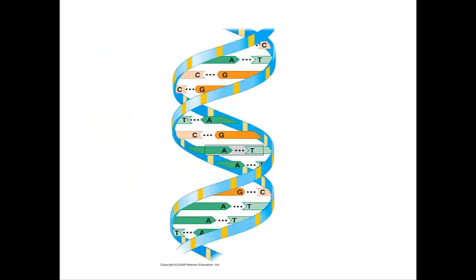Two strands of DNA wrap around each other to form the double helix. The two strands are associated because particular bases always bond to one another. So if you look, you can see that A is always paired to T — adenine to thymine.